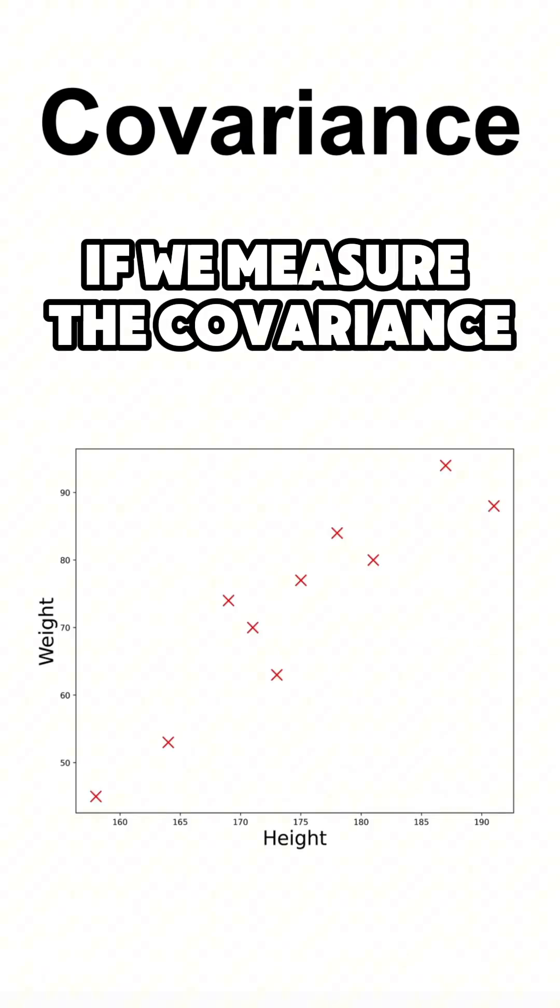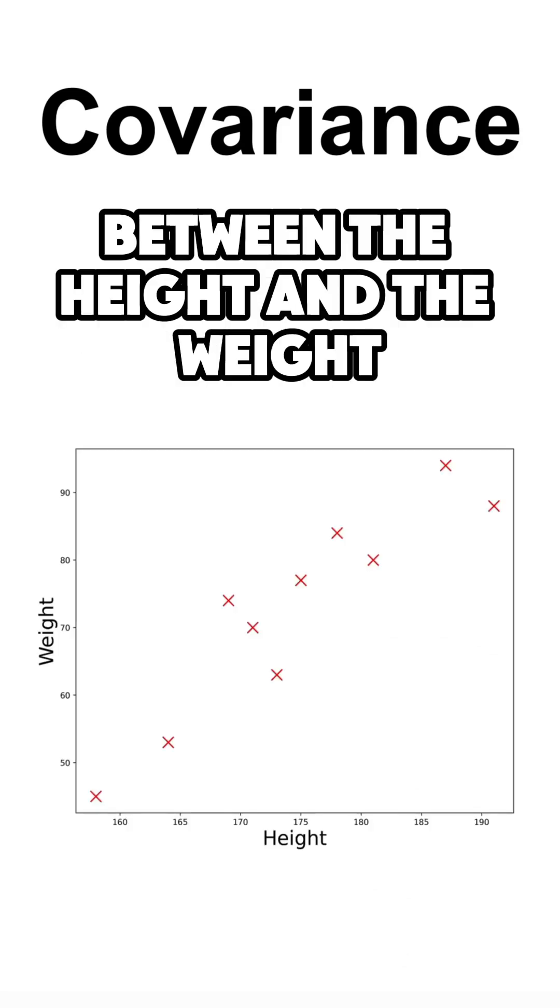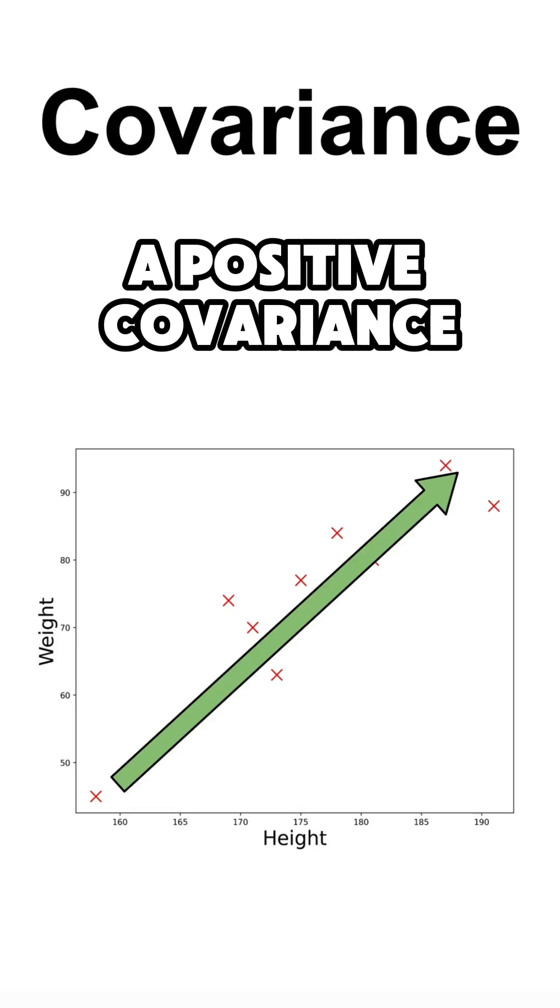For instance, if we measure the covariance between the height and the weight of people, we would observe a positive covariance.